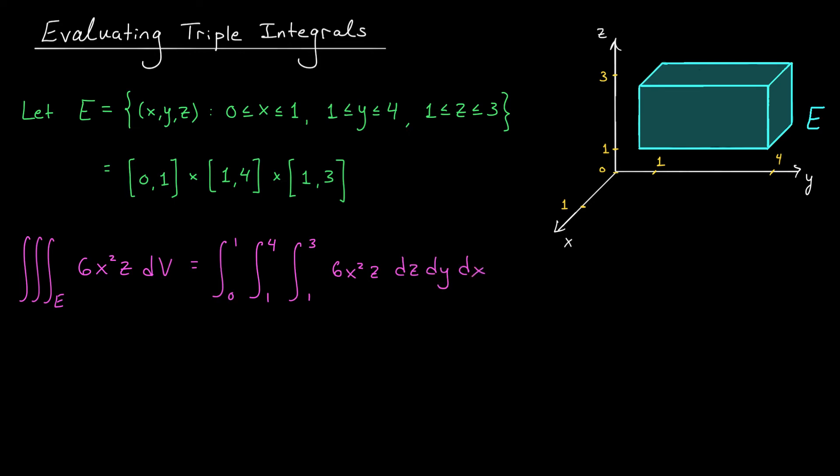You probably know where to go from here, but let's just work through the first step together. Starting with the innermost integral, an antiderivative with respect to z is going to be 6x² (this is treated like a constant) times z² over 2. We sub in the bounds, giving us the integral from 0 to 1 of the integral from 1 to 4 of 24x² dy dx.